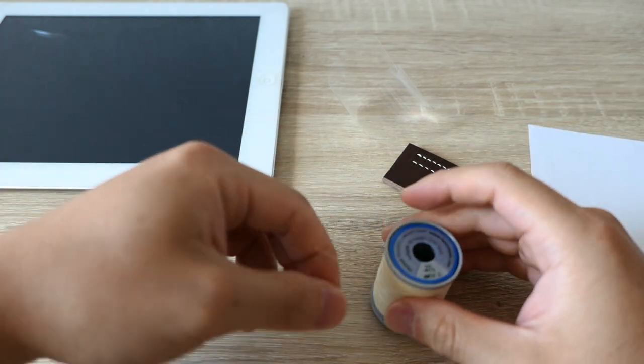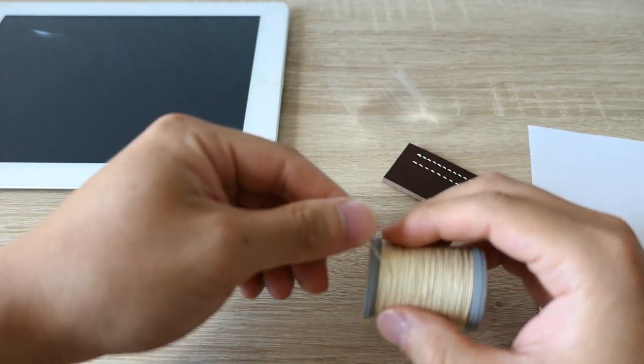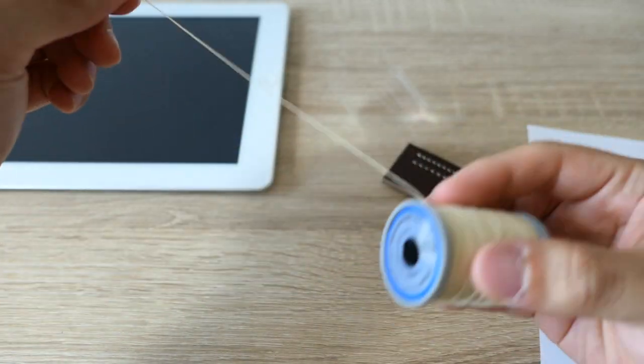And the problem with that was the inconsistency of the linen. If you pull, unspool your thread, your French linen thread, for example.